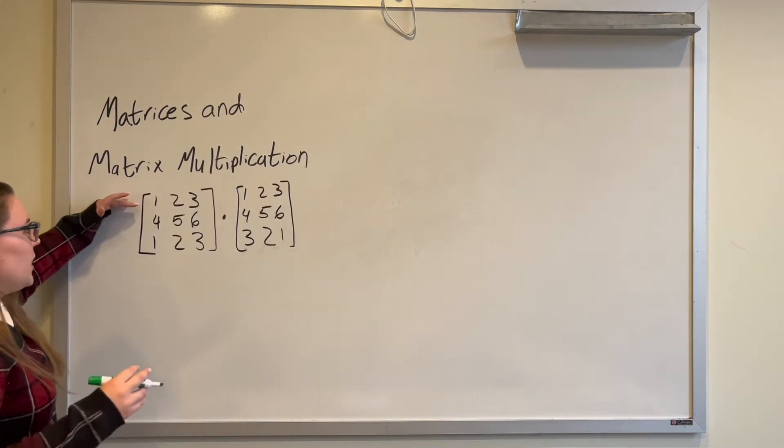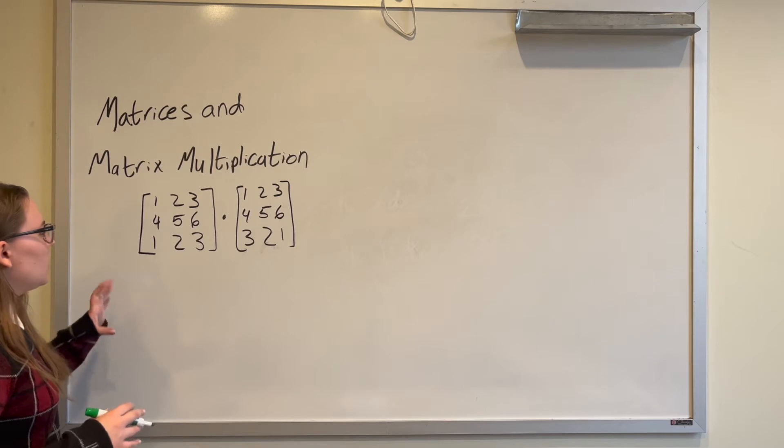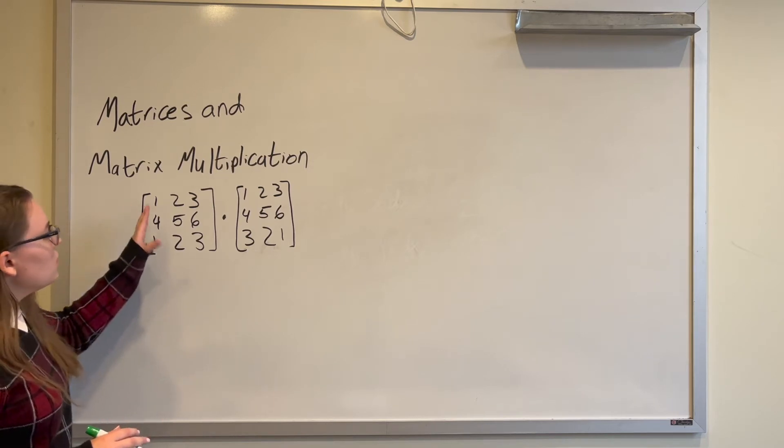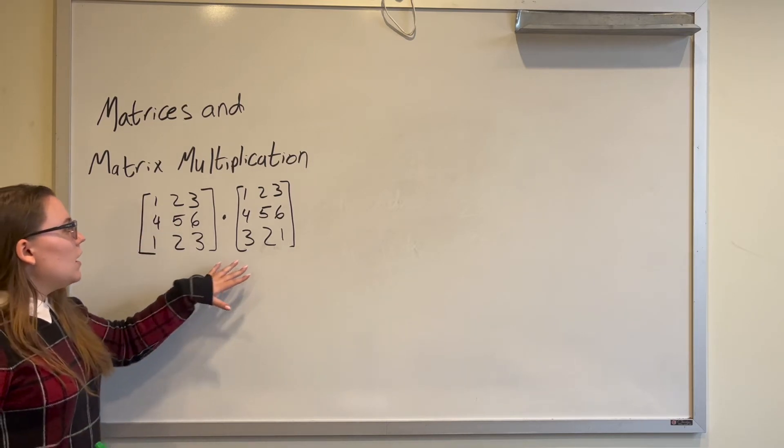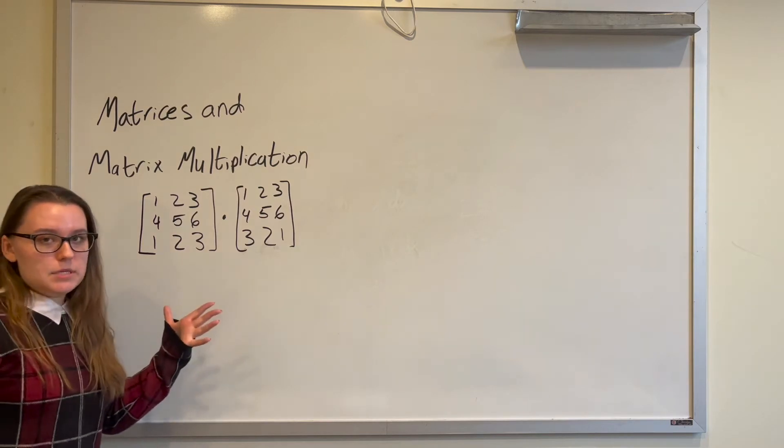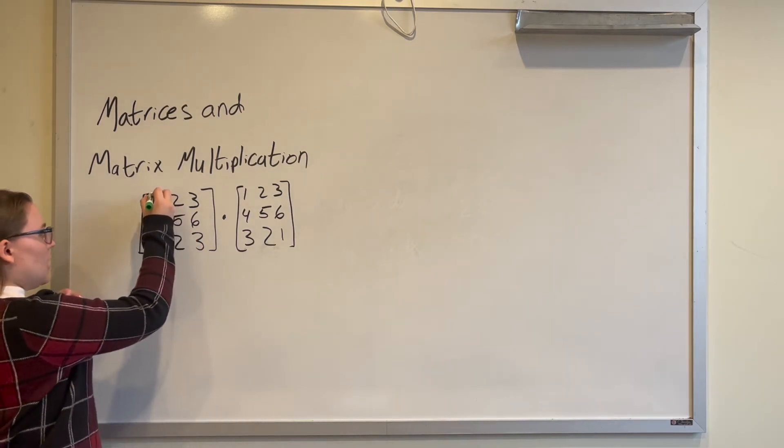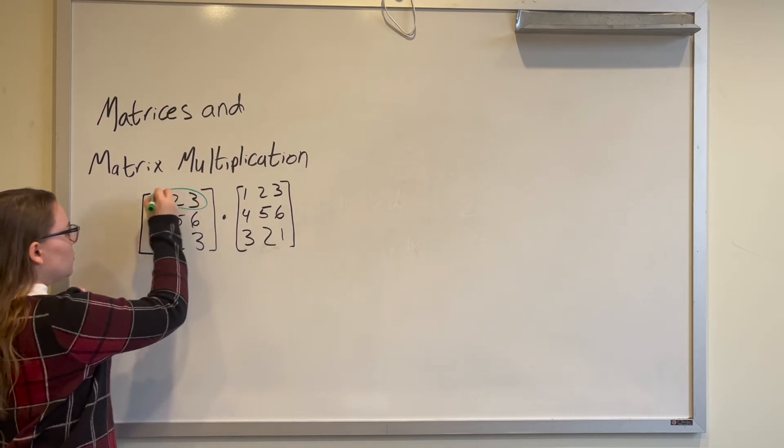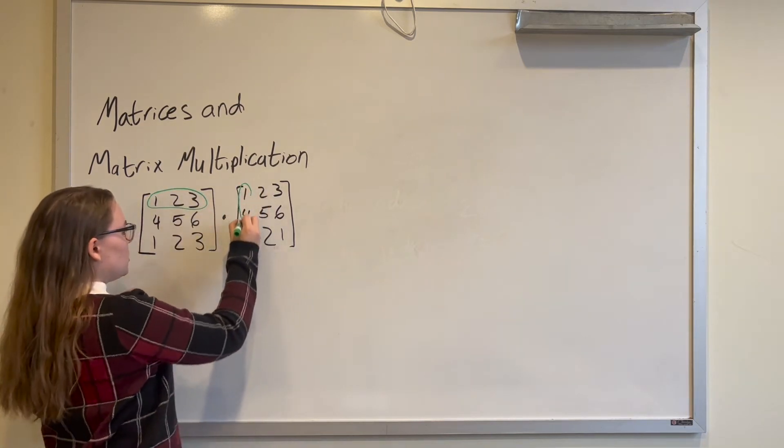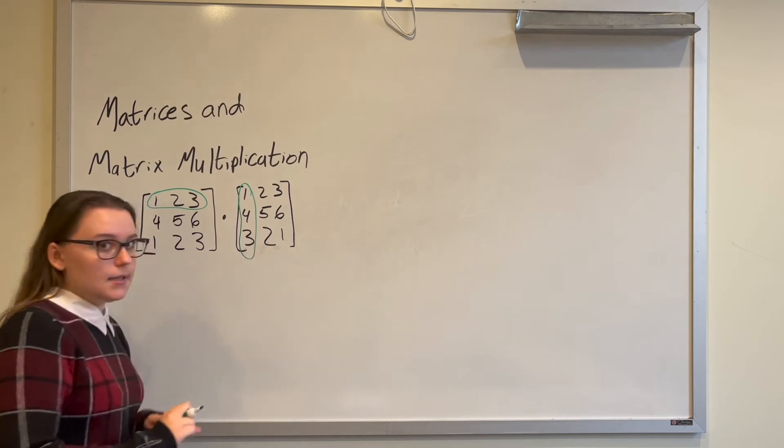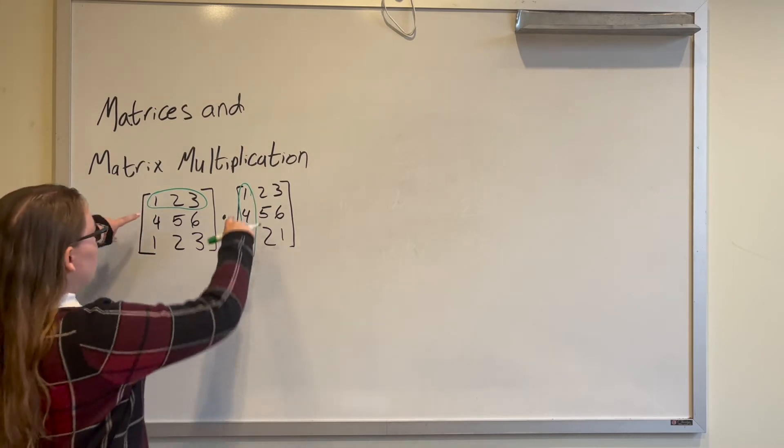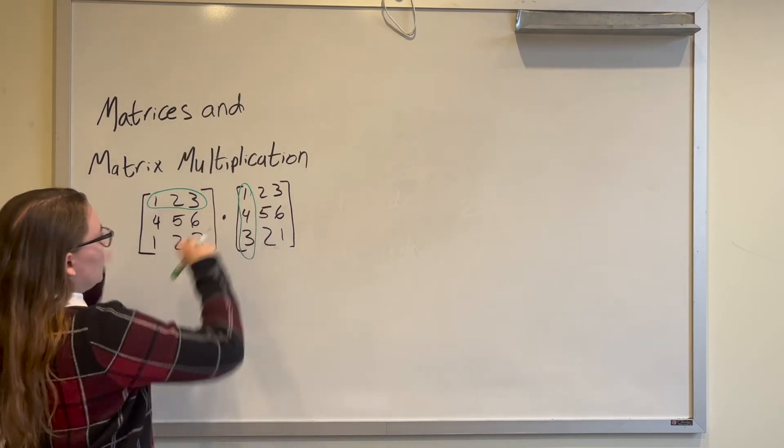So to multiply we are going to take different rows and columns of each matrix and multiply them together to get a new matrix. The first thing that we're going to do is we're going to multiply the first row times the first column to get the first value, the value in our top left corner of our new matrix.